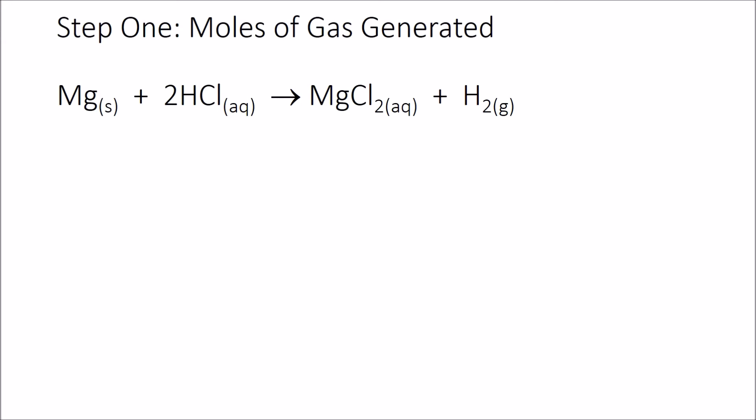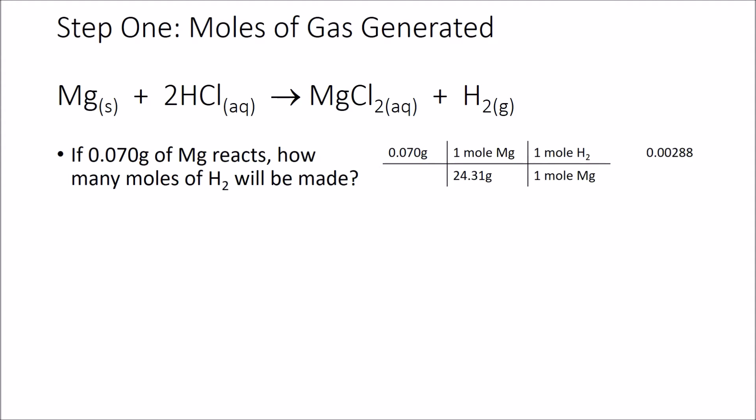Here's the reaction we're using. We're going to put some magnesium and hydrochloric acid to make magnesium chloride and hydrogen gas. So we're going to collect that gas, and we're going to use 0.070 grams of magnesium. So how many moles of hydrogen are going to be made? We can use some simple stoichiometry to do that, and the stoichiometry we use is off to the right, and we're going to make 0.00288 moles of hydrogen.